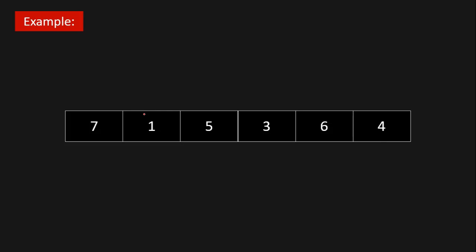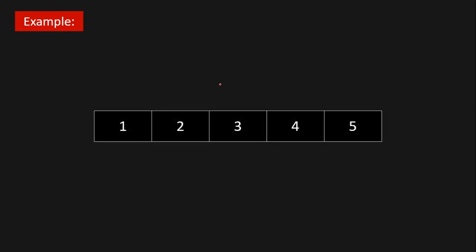Given this array, we have to return the maximum profit. If we buy at 1 and sell at 5, we have a profit of 4. If we buy at 3 and sell at 6, we have a profit of 3. Four plus three equals 7, so the maximum profit for this given array is 7 — and that is what we return.